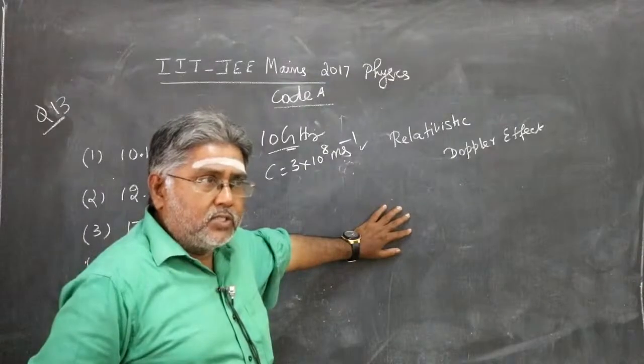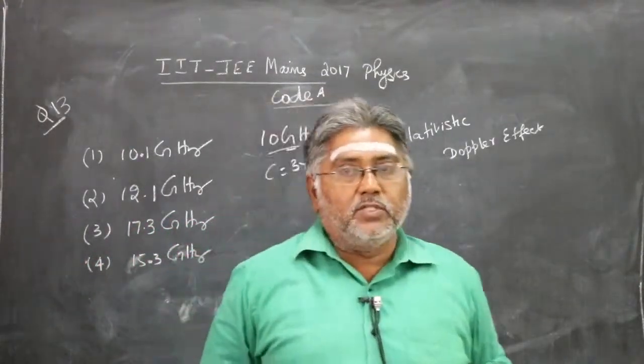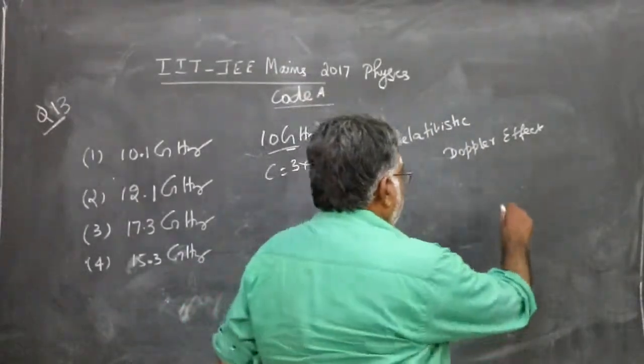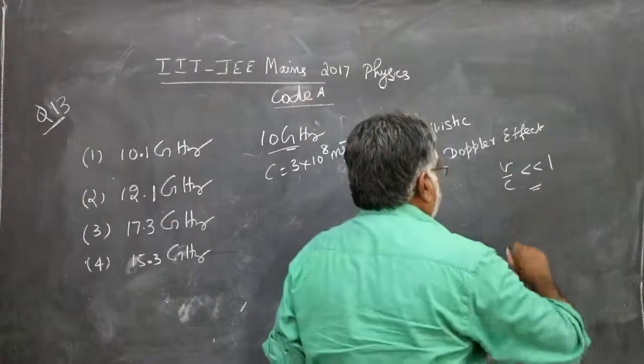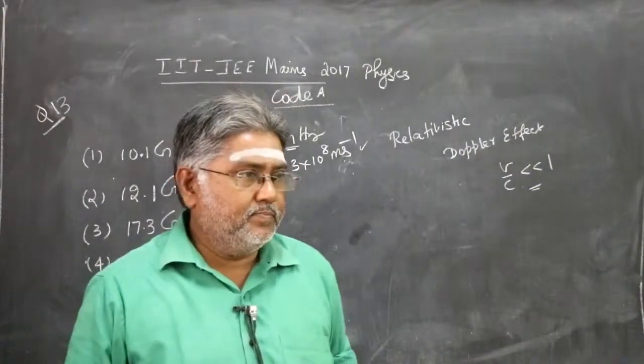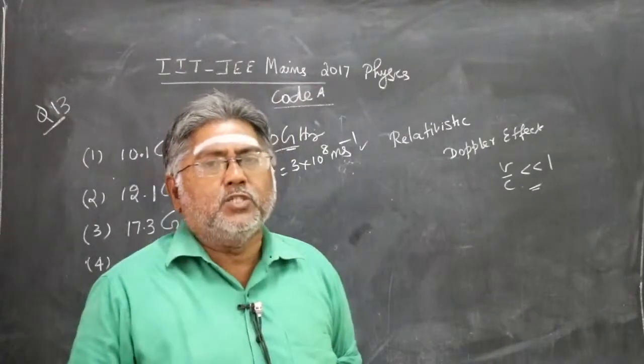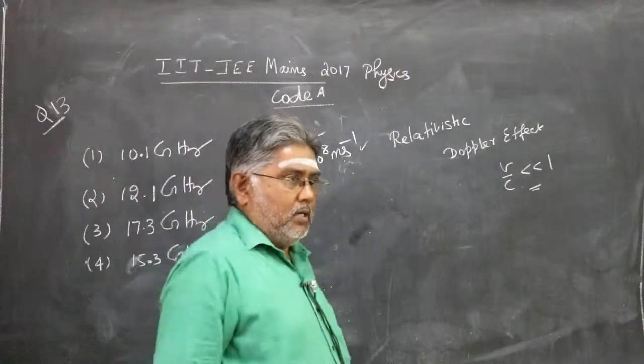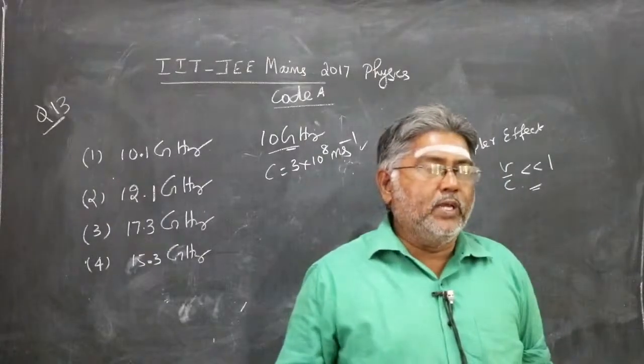So how do you know that this is a relativistic case and not non-relativistic case? Very simple. If V by C is really very less than 1, then all non-relativistic formulae will be okay. But as V approaches the speed of light... what is V actually? V is the speed of the body which is moving, and C is the speed of light.